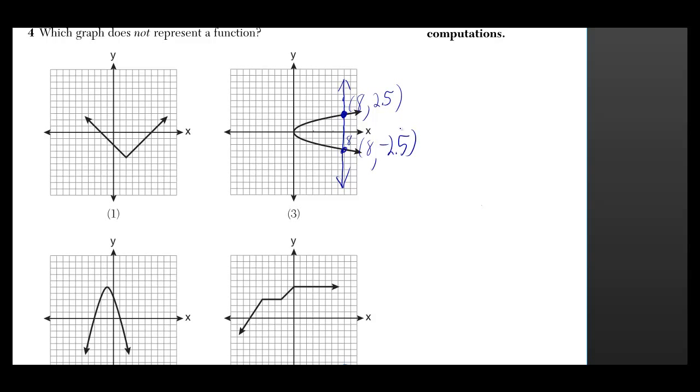But the point about the vertical line test is the fact that we got two different y values for the same x value. Another way of saying that is for the same input we got two different outputs. Almost two different answers if you will.